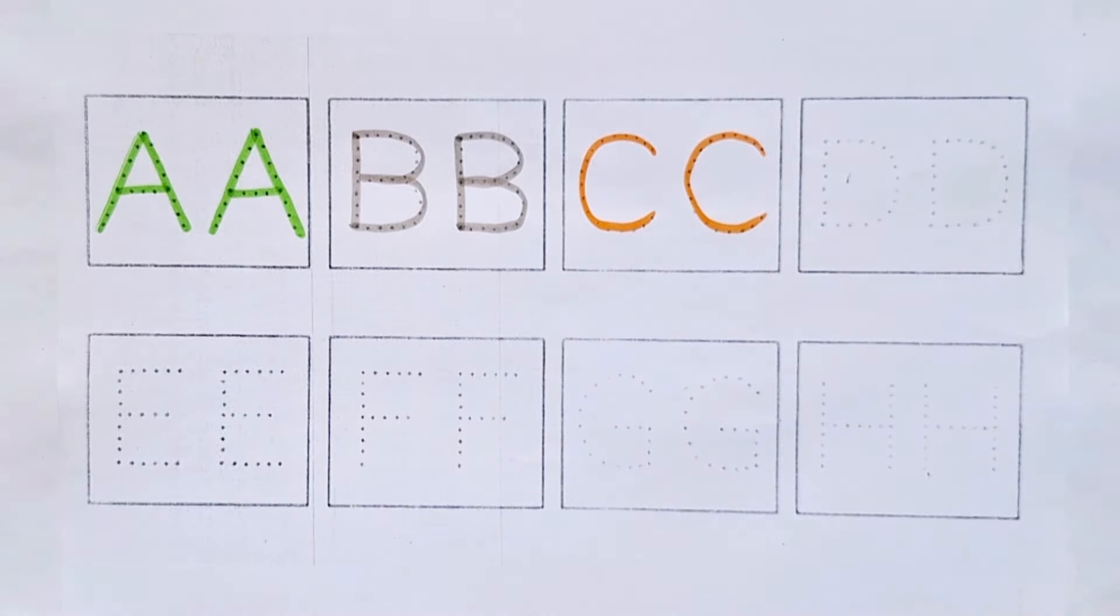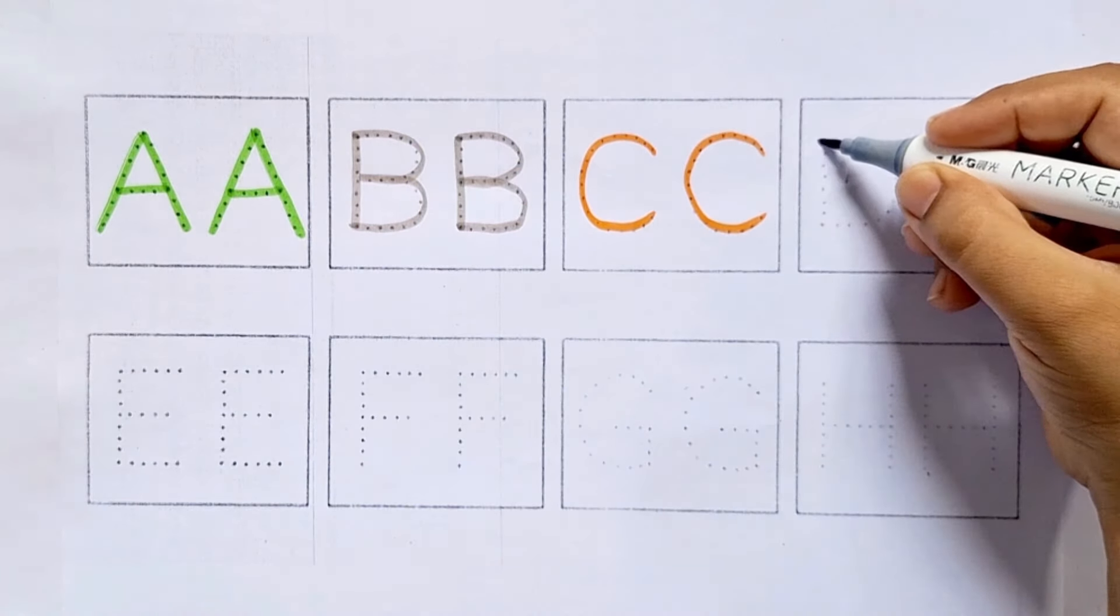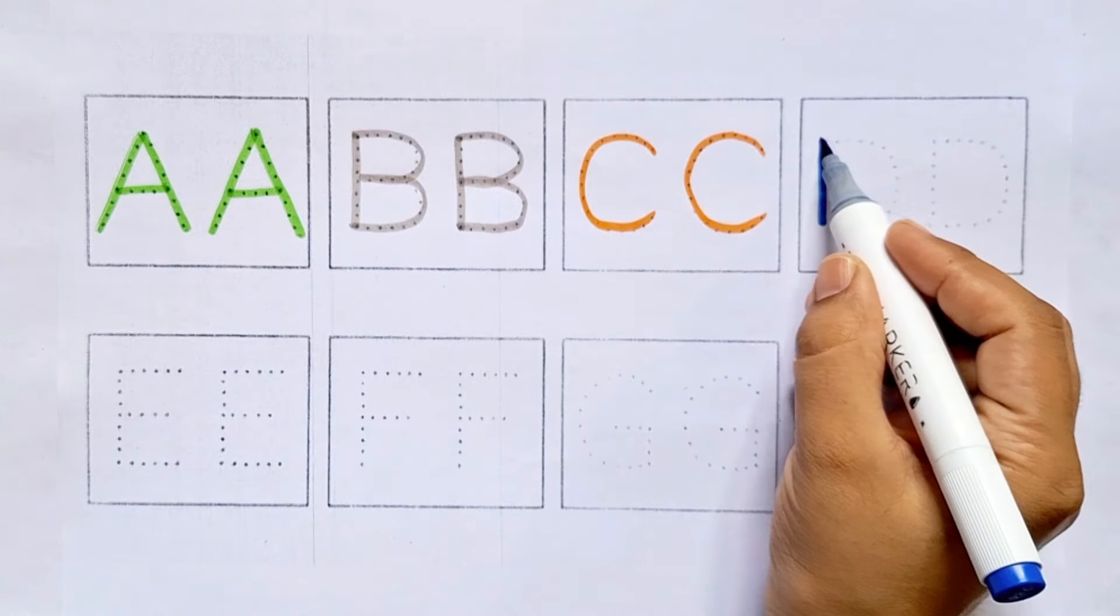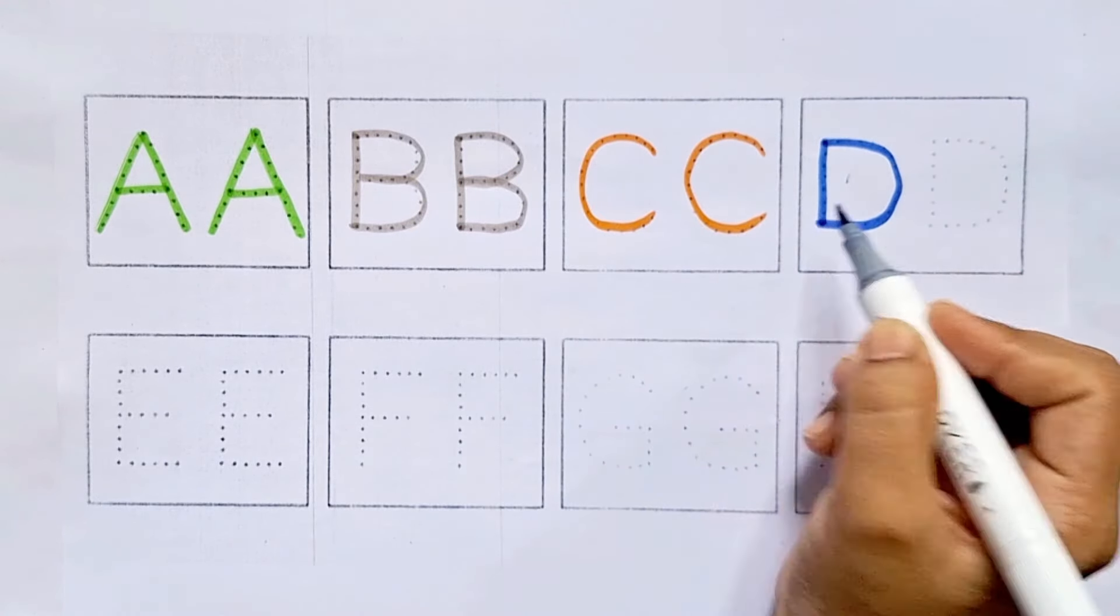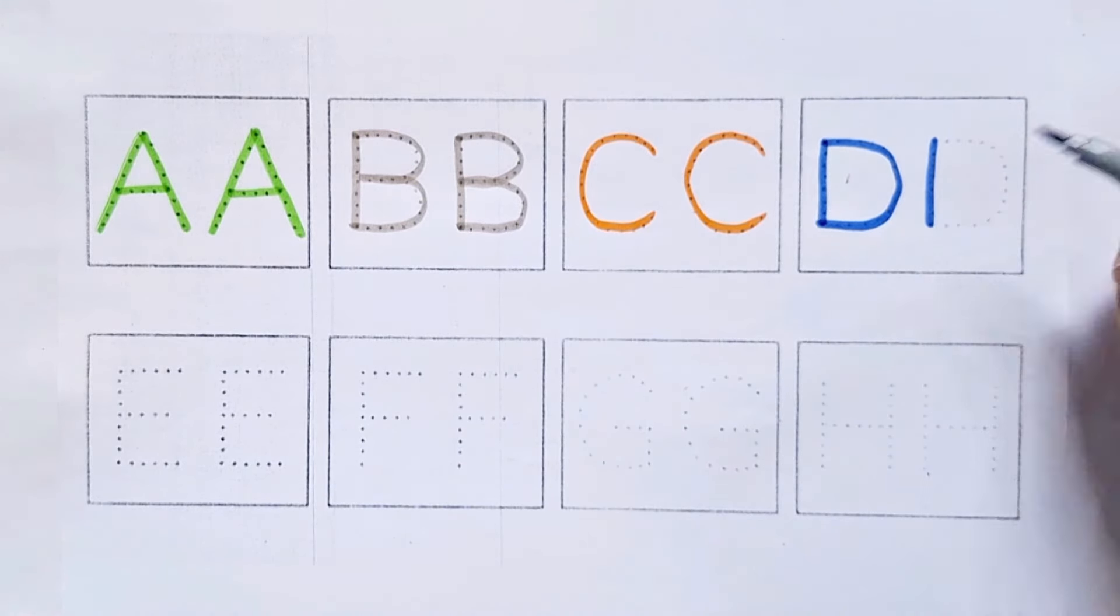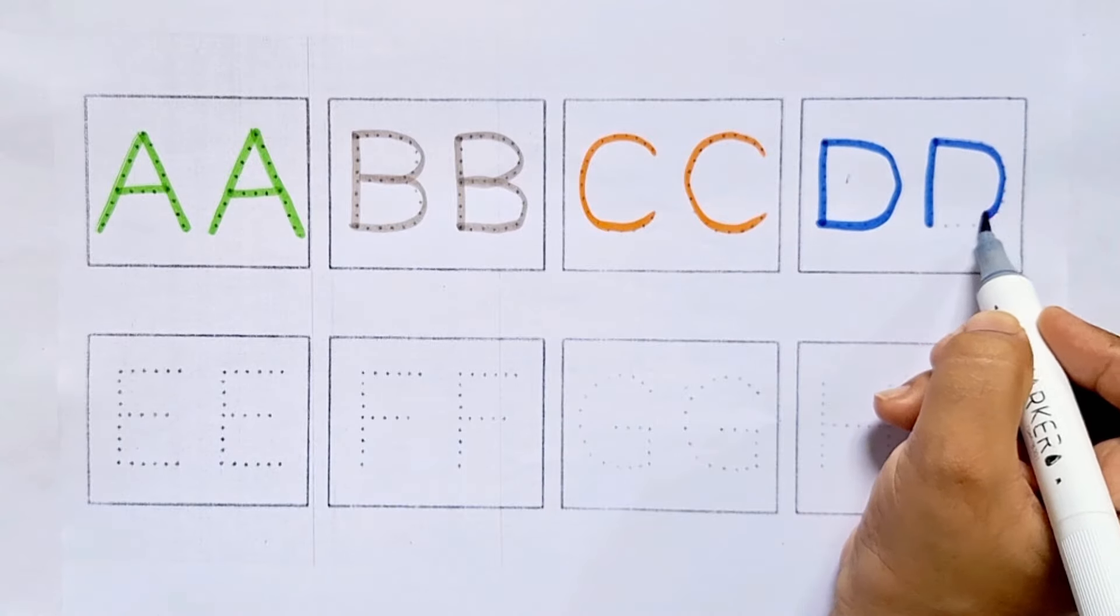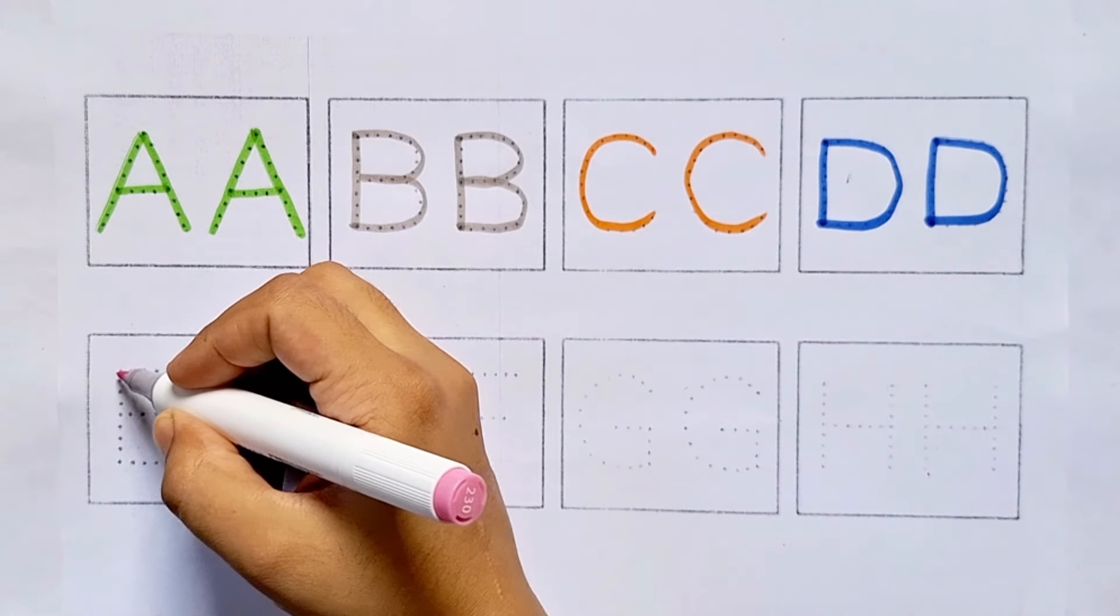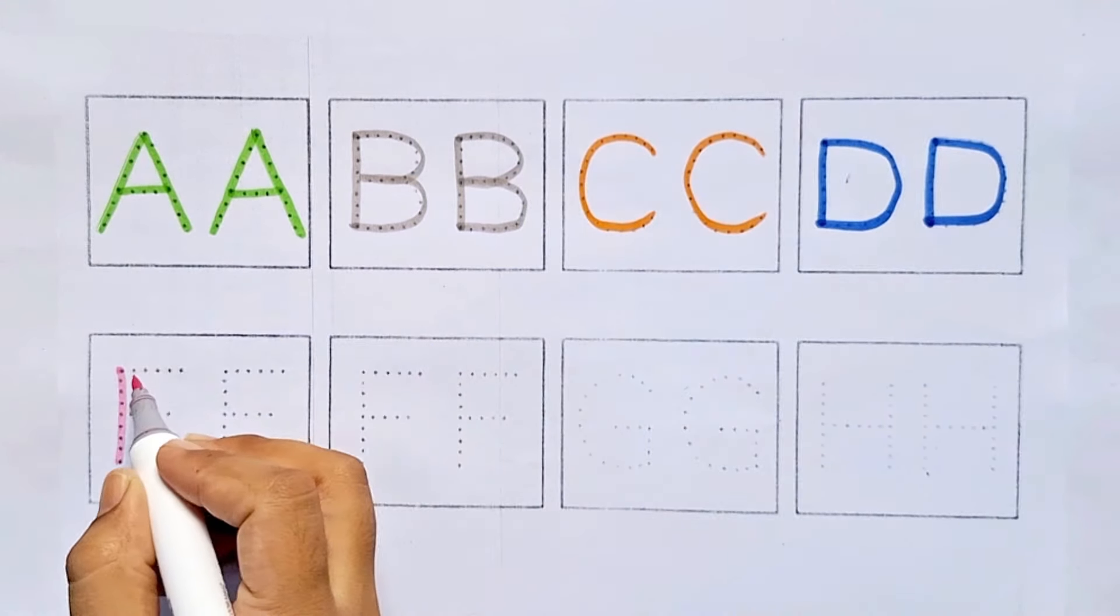C, C for cat and C for cow. D, D for dog and D for doll.